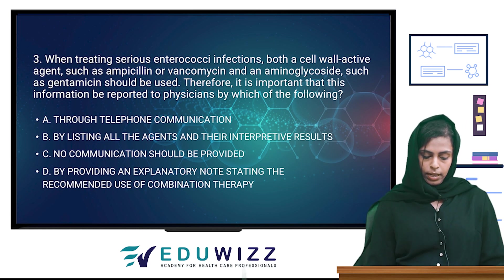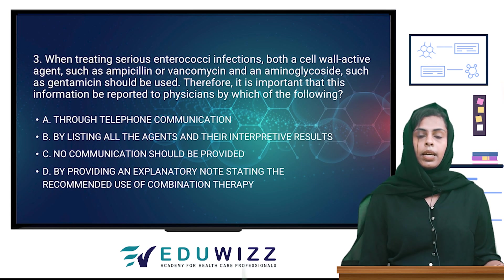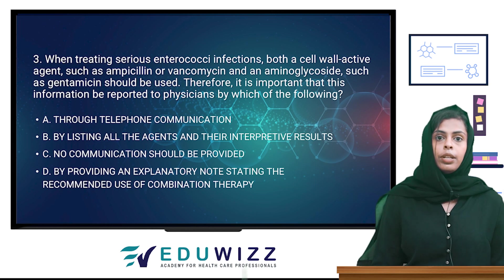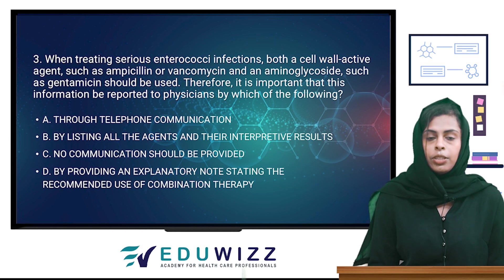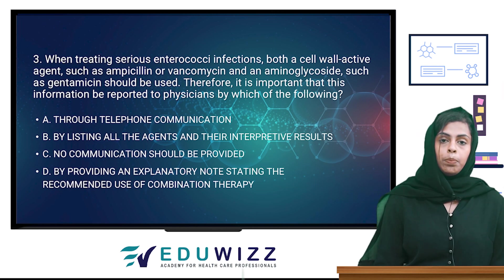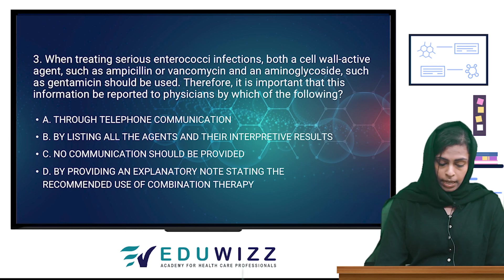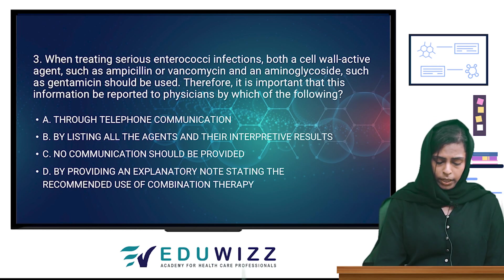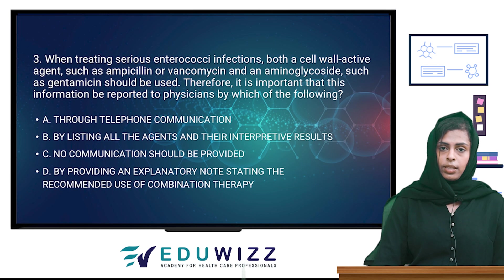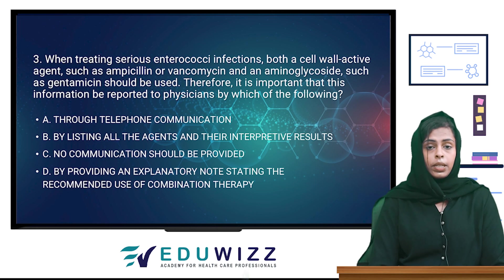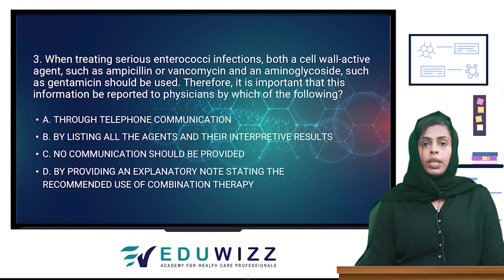The first antibiotic is vancomycin, which breaks cell wall synthesis. The other is gentamicin, an aminoglycoside. We need to use a combination of antibiotics. The options for reporting to the physician are: through telephone communication listing all agents and their interpretive results; no communication provided; or by providing an explanatory note stating the recommended use of combination therapy. The answer is: by providing an explanatory note stating the recommended use of combination therapy.